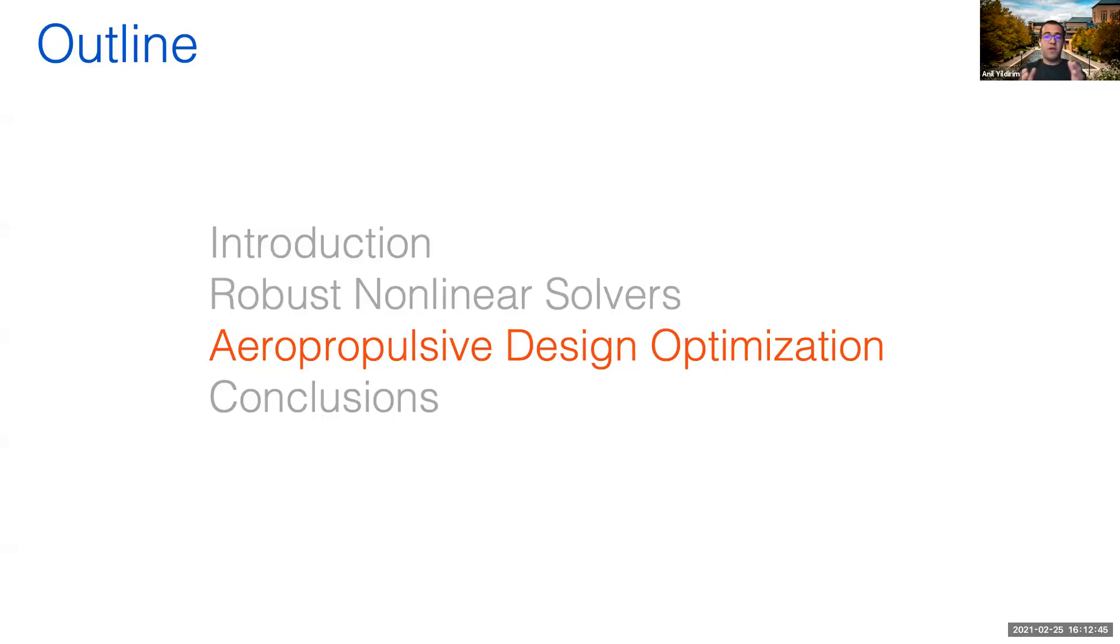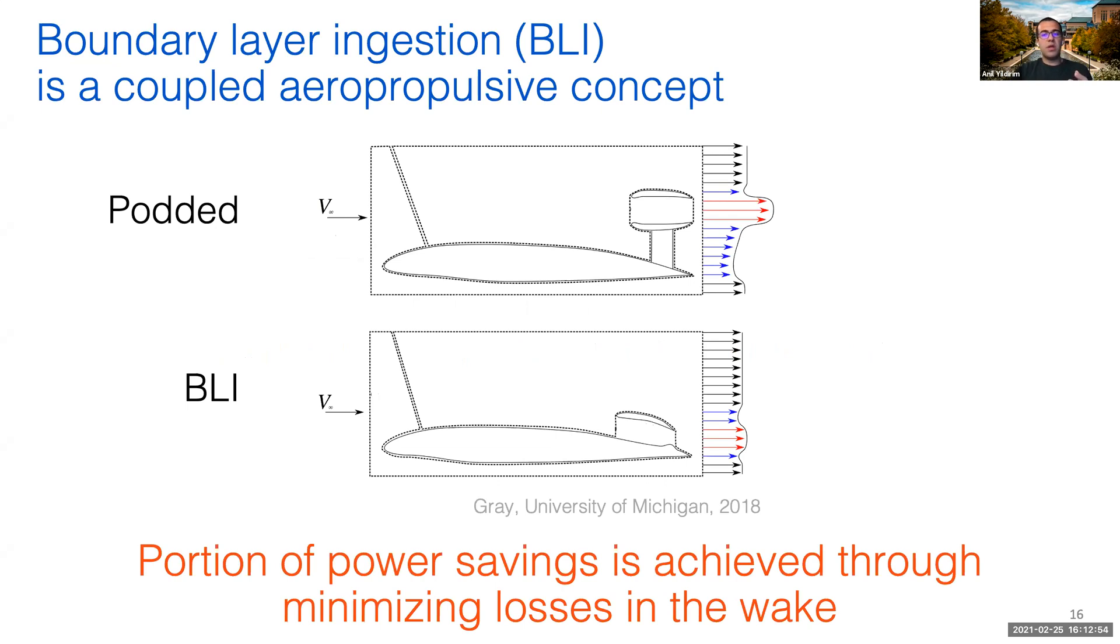That was it for the ANK solver. Now I'll talk a bit about my work on aeropropulsive design optimization. This work is motivated by a technology called Boundary Layer Ingestion, or BLI, which is a coupled aeropropulsive concept. The top figure here is a simplified example of a traditional propulsion system. You have an airframe that generates drag and generates a boundary layer, which is just slow-moving air. You also have a propulsor that's located away from the airframe.